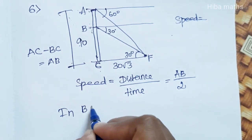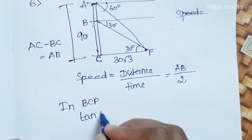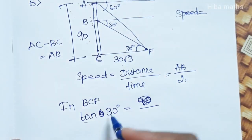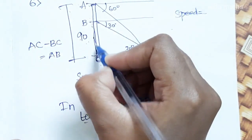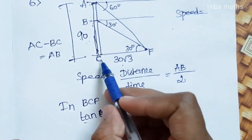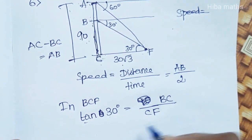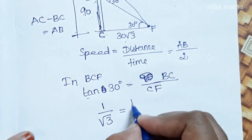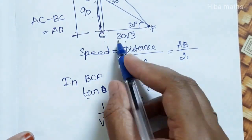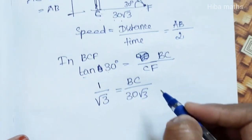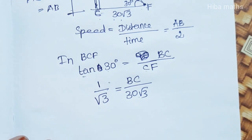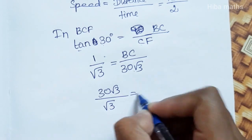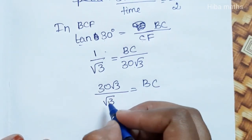In triangle BCF, tan of the angle gives us tan 30 degrees equals opposite over adjacent, that is BC divided by CF. The tan 30 value is 1 by root 3. The CF value is 30 root 3. Substituting, BC equals 30 root 3 divided by root 3.